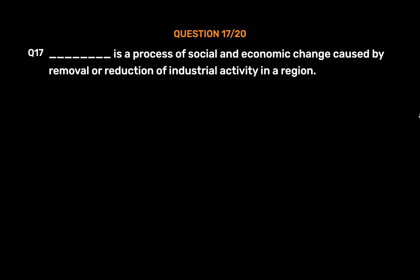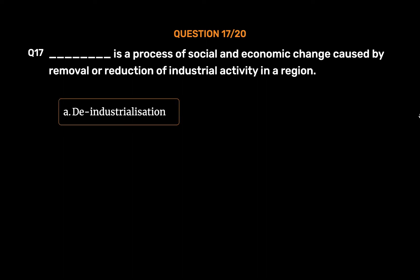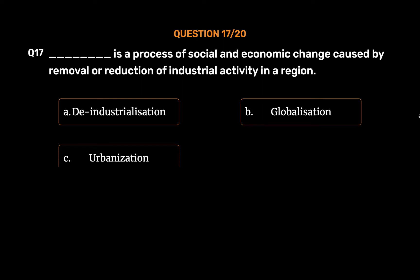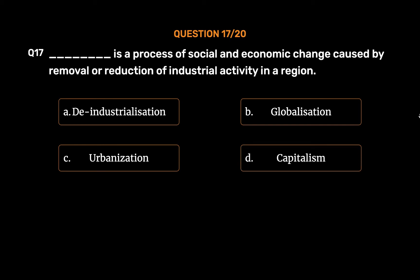Question 17: _____ is a process of social and economic change caused by removal or reduction of industrial activity in a region. Options: A. Deindustrialization, B. Globalization, C. Urbanization, D. Capitalism. The correct answer is Option A: Deindustrialization.